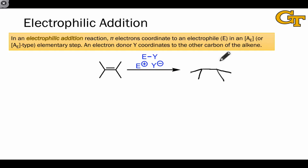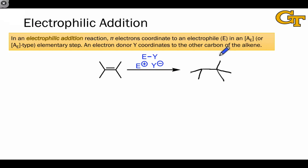In terms of electron flow, one of the new single bonds to the carbons that were formerly involved in a double bond is composed of electrons that were formerly part of the pi bond in the starting material. These electrons coordinate to the electrophile E. The group Y is either an anionic or partially negative group that uses a pair of electrons to coordinate to the other carbon involved in the pi bond in the starting material.